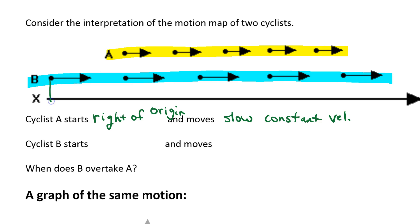Cyclist B starts right at the origin and moves at a, well these are longer, moves at a fast constant velocity.